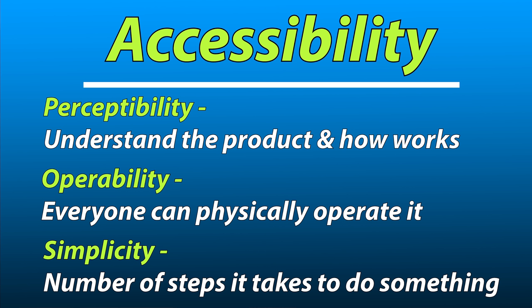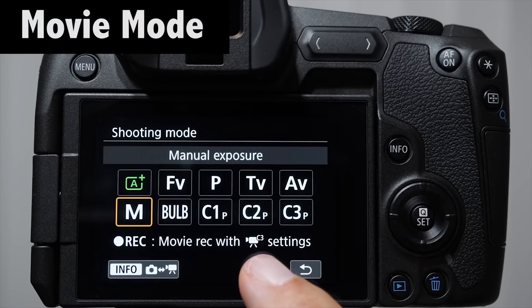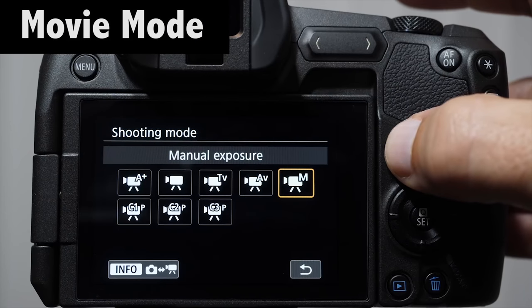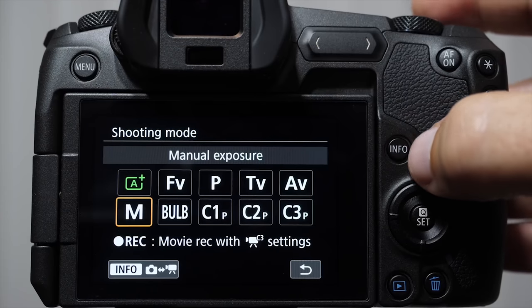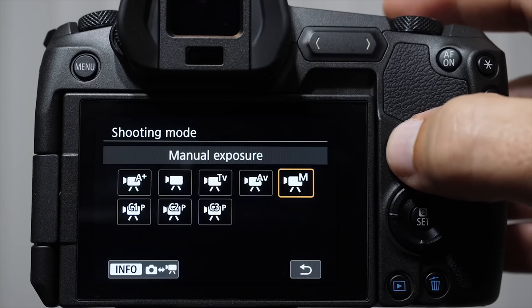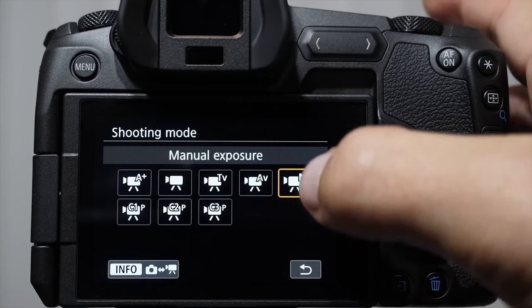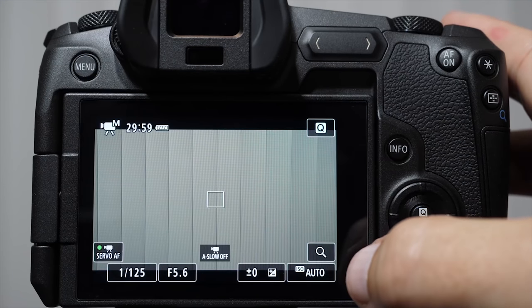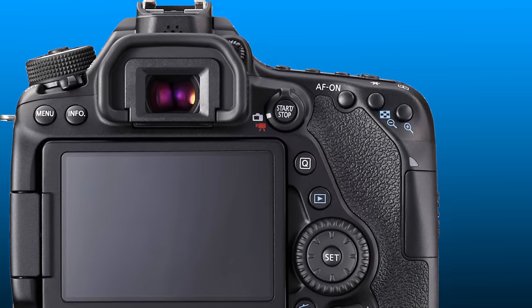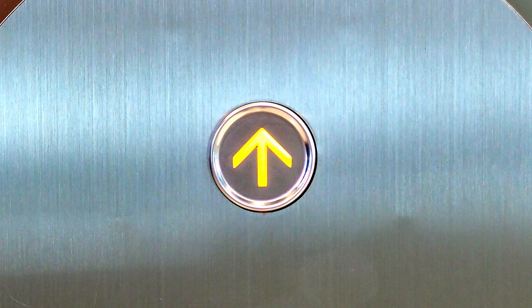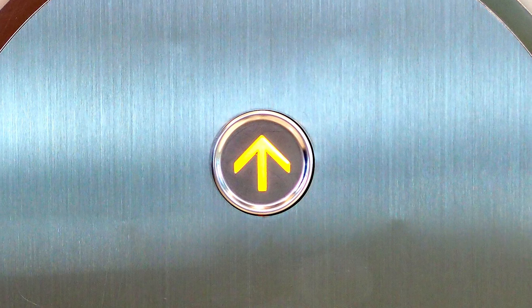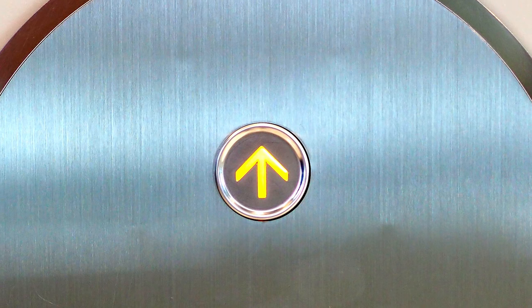The third part of accessibility is simplicity. I refer to this as efficiency, or the number of steps it takes to do something. Every time you add another step to operate a control on a camera, that makes it less efficient. The thing that I was frustrated with was changing back and forth between video and shooting modes for stills, which is something I do all the time — four or five times on a shoot. I don't want to have to press three extra buttons every single time. I want a physical dedicated switch I can just flip over.